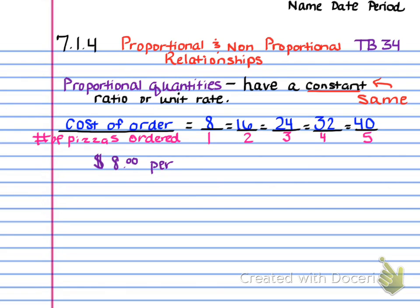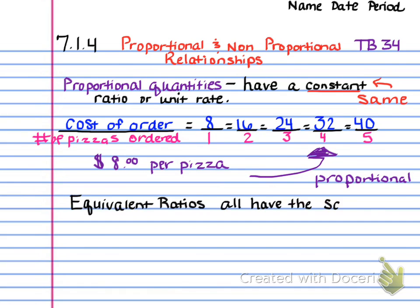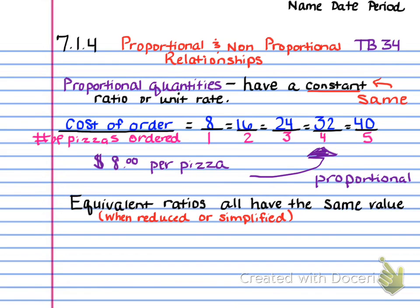So now what we need to do is we have established a relationship of $8 per pizza. It is proportional and we support that with equivalent ratios. So the equivalent ratios all have the same value when they're reduced or simplified. So now you can see that whenever you simplify all of these fractions, 16 over 2, 24 over 3, they all equal 8 to 1 or 8.